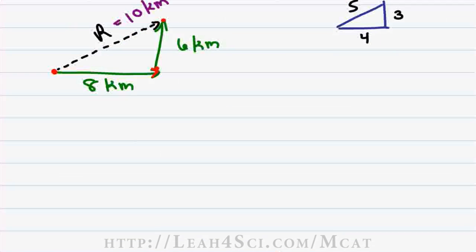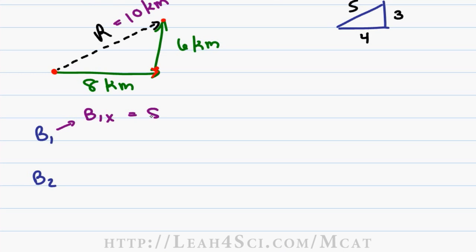Now let's prove it mathematically. We'll use the components B1 for biking the first leg of the journey and B2 for biking the second leg of the journey. The first leg of the journey is 8 kilometers in the x direction so we have B1x equals 8. Since B1 is only in the x direction, B1y equals 0.